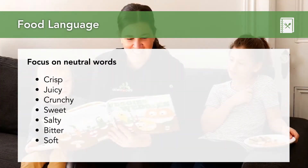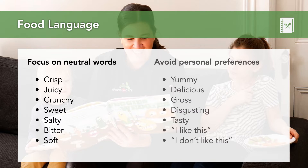We encourage you to begin by creating a list of neutral descriptive words with your class, focusing on neutral adjectives such as crisp, salty, bitter, soft, sweet, crunchy, juicy, etc. Just stay away from words like yummy, delicious, gross, disgusting, tasty — all of which are personal preferences and don't actually say anything about the food itself.